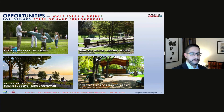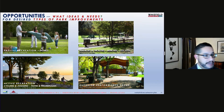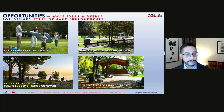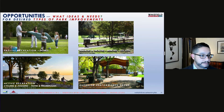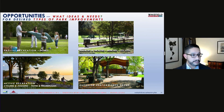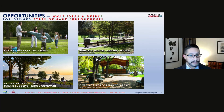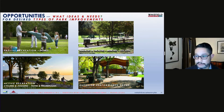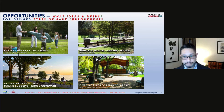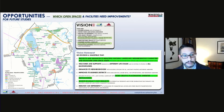Now we move from existing conditions to ideas and opportunities. What types of ideas for parks do you have? What are the open space needs for Wakefield residents? This slide shows examples of park improvements to consider and start the conversation, including passive recreation areas for picnics, benches, and tot lots; paths and promenades for walking and jogging; and outdoor performance areas.